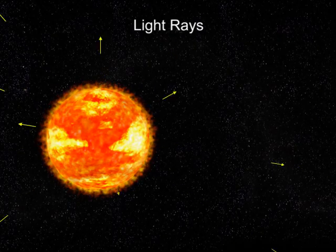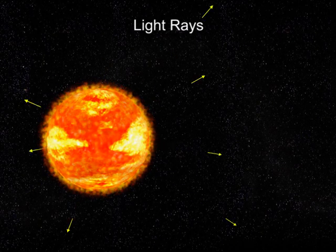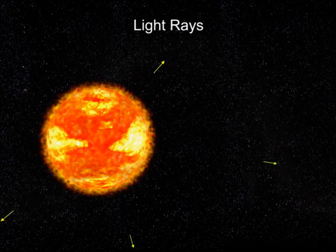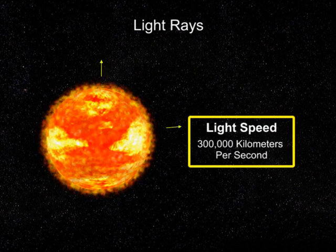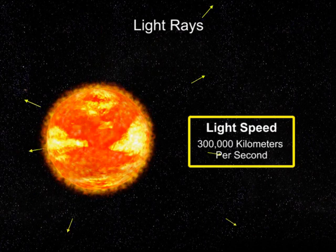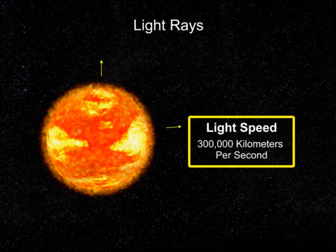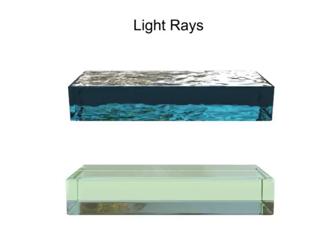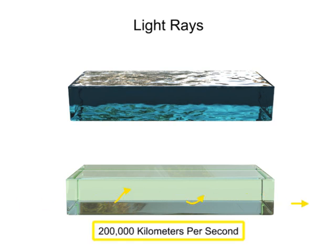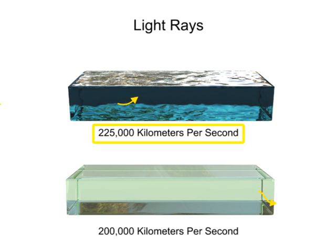Light rays travel through space in a straight line at approximately 300,000 kilometers per second. As light passes through a transparent medium, such as water or glass, its speed is decreased. For glass, it's reduced to 200,000 kilometers per second, and for water, the speed is 225,000 kilometers per second.